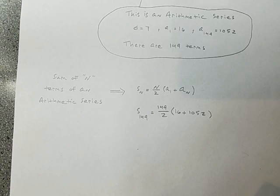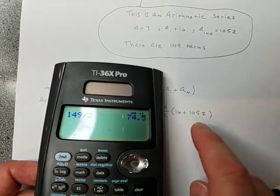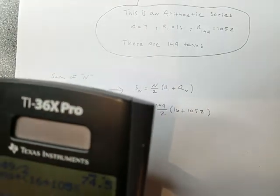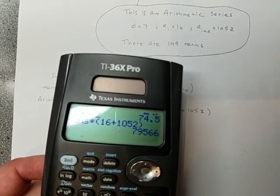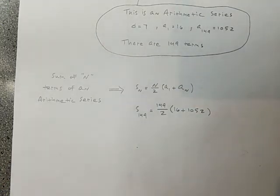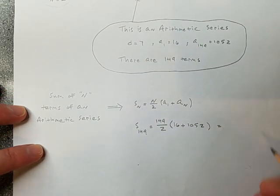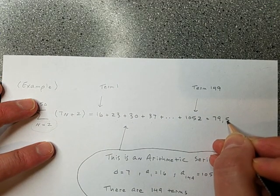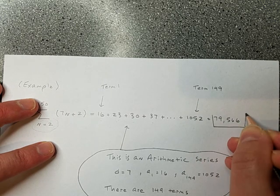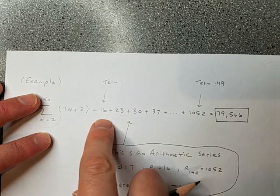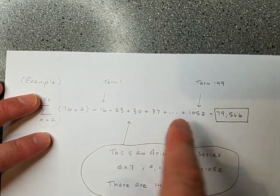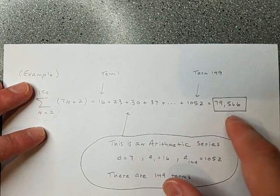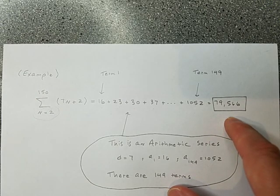And that will be our grand total. So what's that? 149 over 2. So I'll get that to be 74.5. And then I'll multiply that by 16 plus 1052. And then I get 79,566. So let's in fact write that up here. 79,566. So if you took 16 plus 23 plus 30 plus 37 and you kept adding like that, and there are going to be a lot of numbers there, there's going to be 149 total. That would be the grand total. If you did it the long way, that's what you'd get.